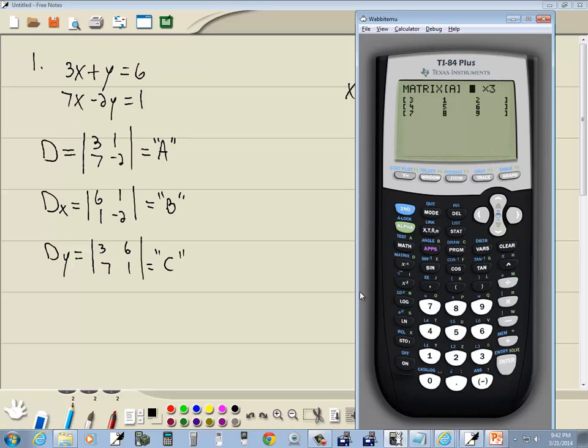And A, we said, was going to be a 2 by 2, rows by columns. So 2 enter, 2 enter. And we'll put in 3, 1. So 3 enter, 1 enter, 7 enter, negative 2 enter. So that's my first matrix here.